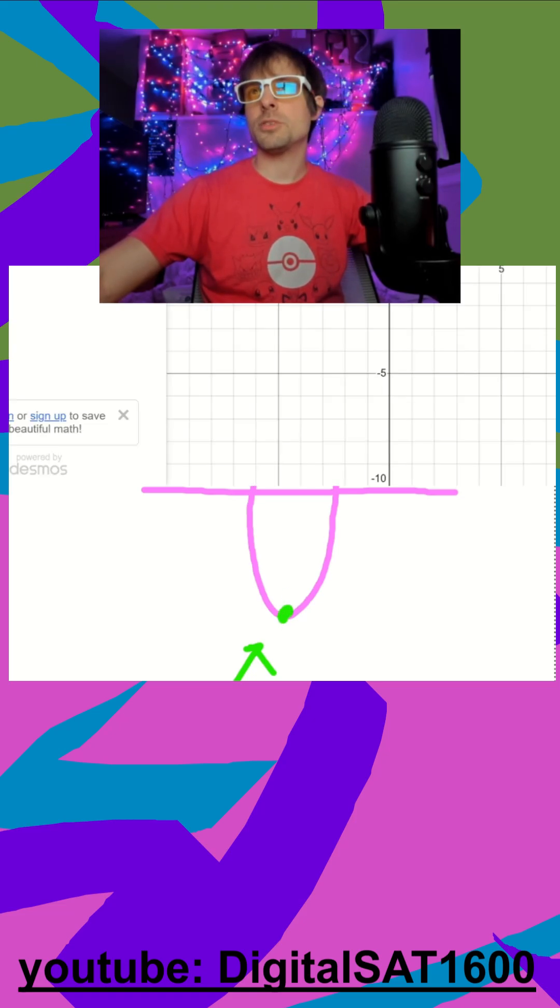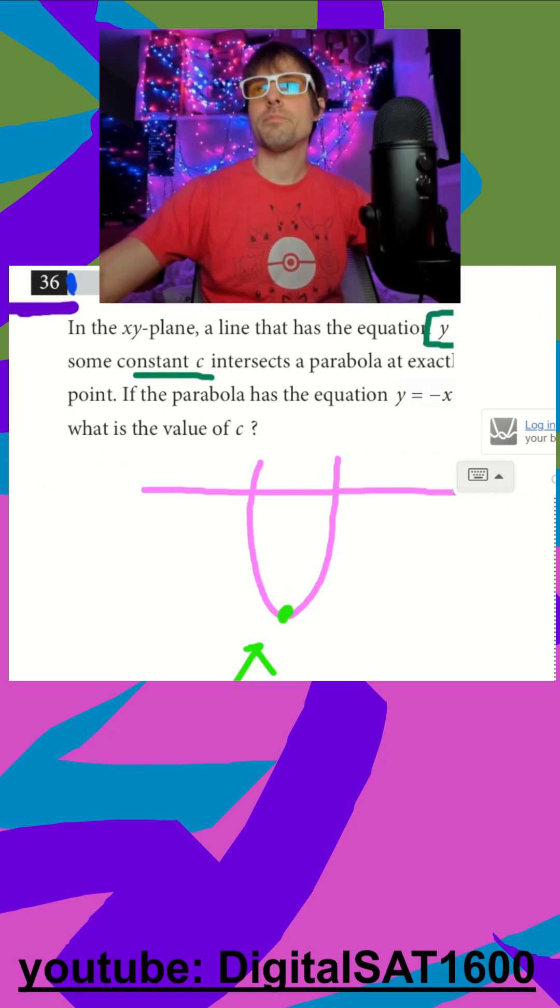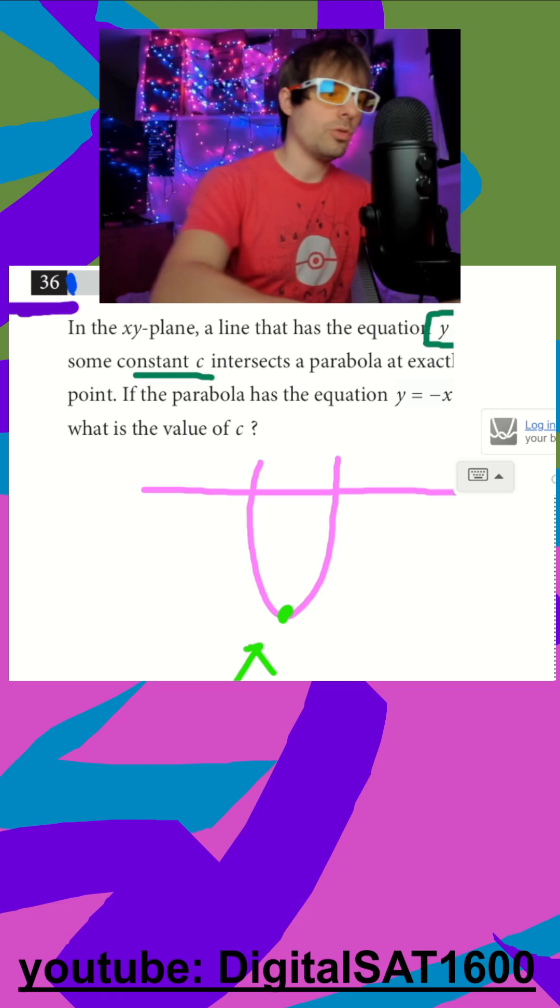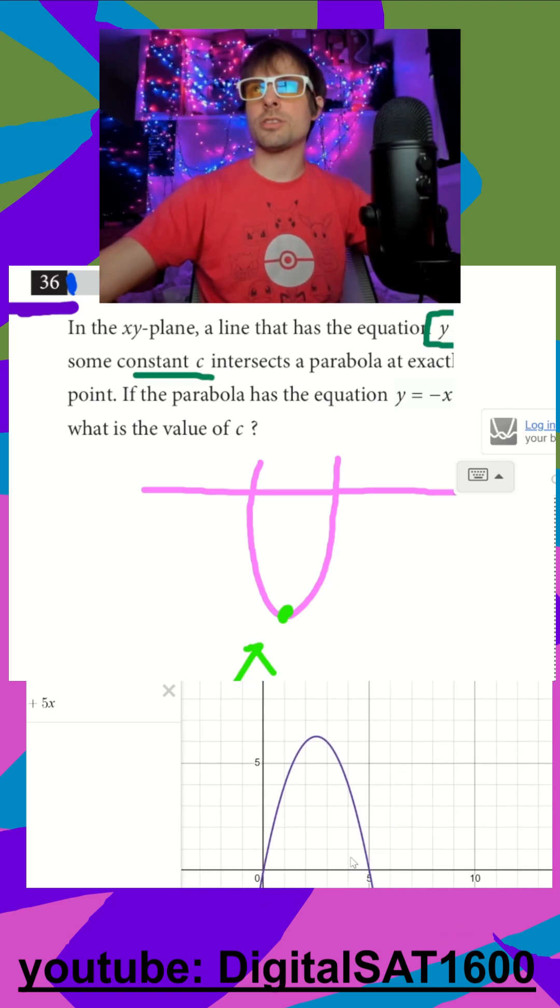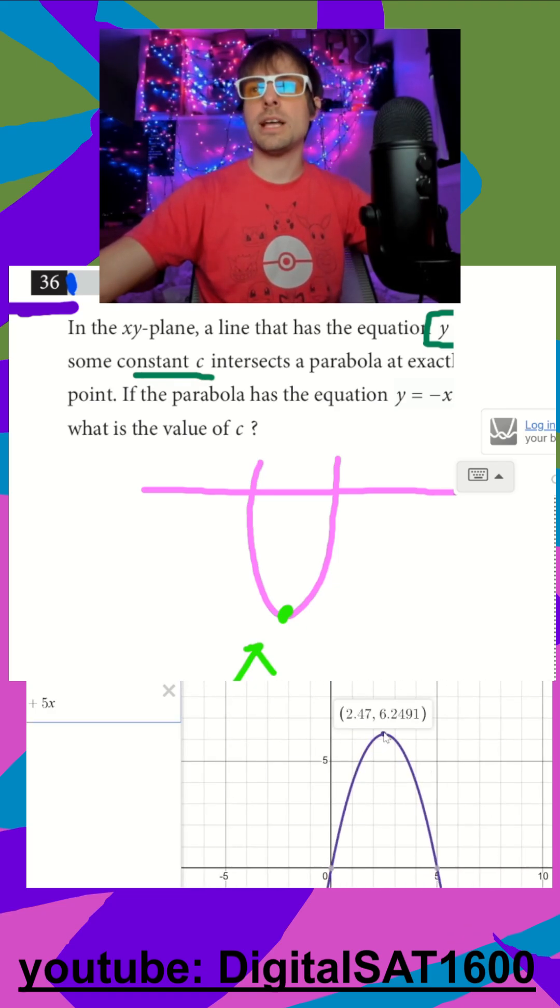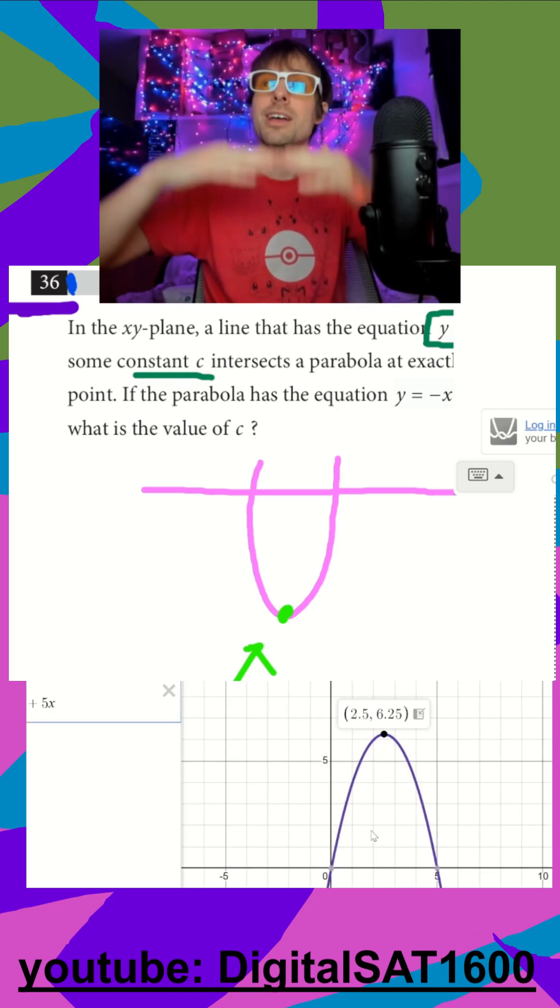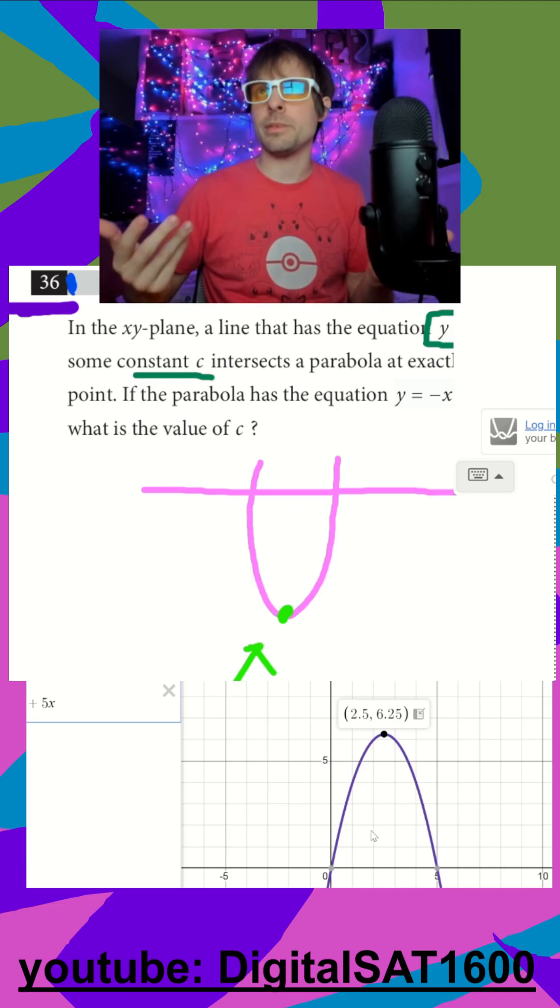So if I just throw this guy in Desmos, let's shift this over to the side here. And we do y equals negative x to the second plus 5x. I don't even have to draw my horizontal line because I know a horizontal line can only intersect a parabola at one point, and that's always going to be at our vertex.